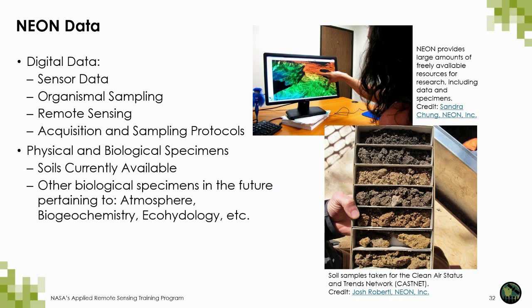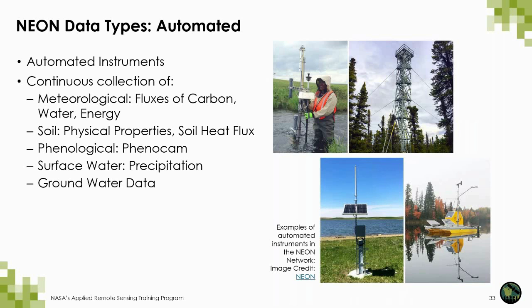These resources cover five key data themes: atmosphere, biogeochemistry, eco-hydrology, land use and land cover processes, and organism, population, and communities. NEON deploys automated instruments to collect meteorological, soil, phenological, surface water, and groundwater data at each of the field sites. Data collected continuously capture patterns and cycles across various time periods, ranging from seconds to years. NEON calibrates and quality checks the sensors to minimize measurement errors and maximize the quality of the collected data.